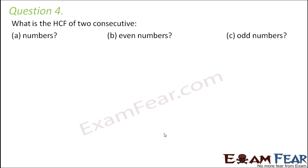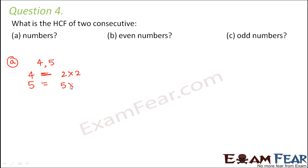Question number 4: What is the HCF of 2 consecutive numbers? Let us take examples and see the results. Consider 4 and 5. 4 can be written as 2 into 2, and 5 can be written as 5 into 1. When you write 2 into 2 you actually mean 2 into 2 into 1, so the common factor is 1. Therefore the HCF equals 1.